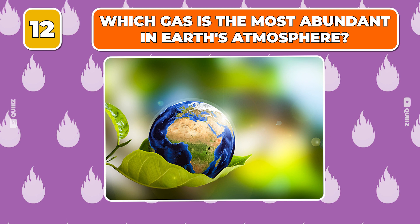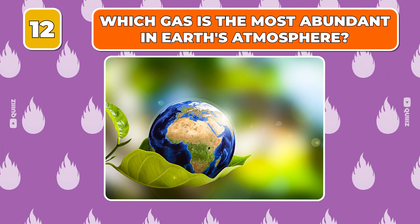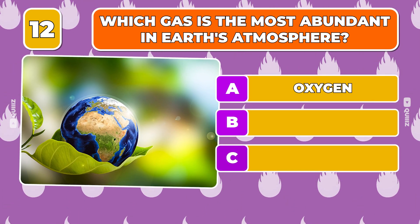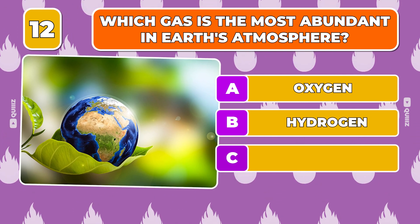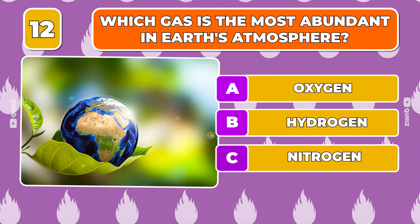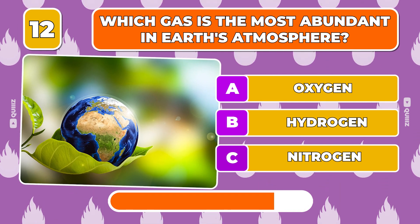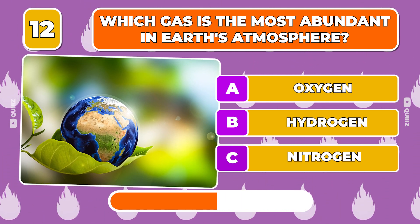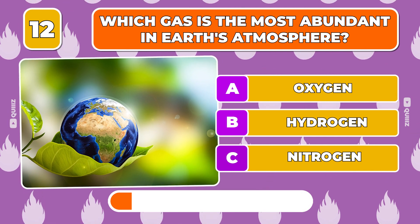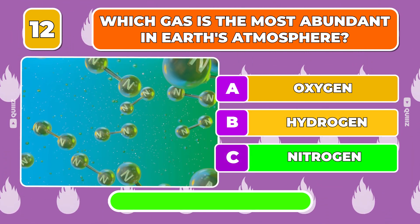Question 12. Which gas is the most abundant in Earth's atmosphere? Oxygen, Hydrogen, Nitrogen. The answer is nitrogen.